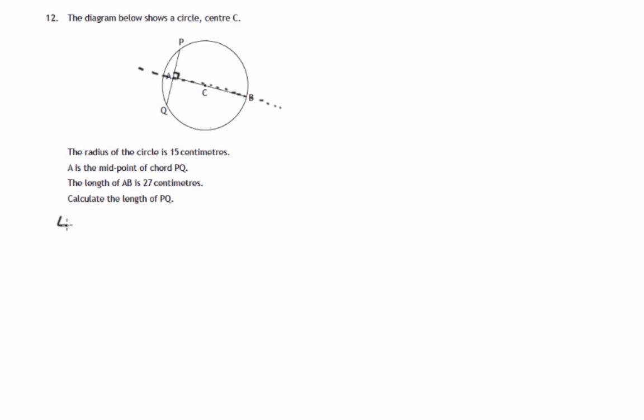So that's the first sign. Angle PAC is 90 degrees since AB is a line from the midpoint of chord PQ through the centre, C. It's an axis of symmetry. So that establishes the right angle.